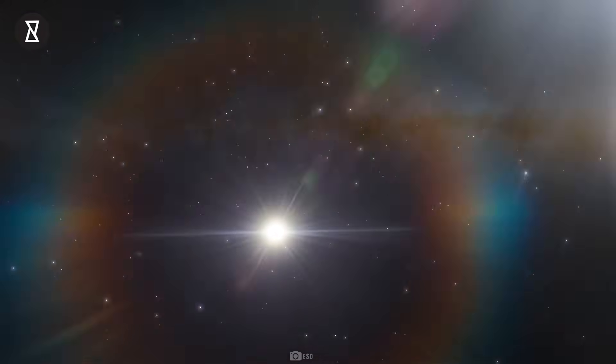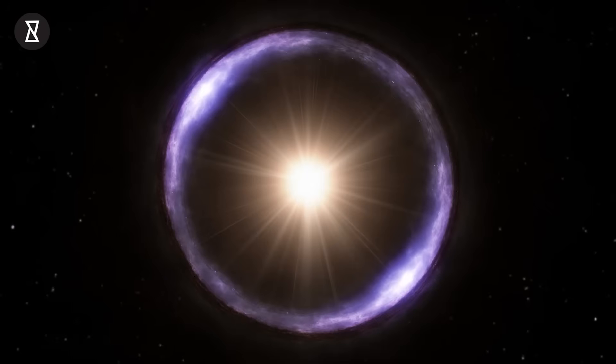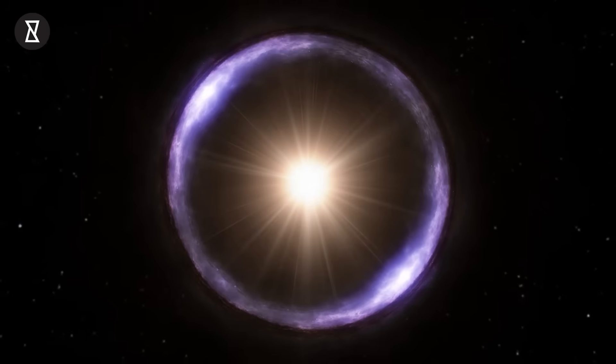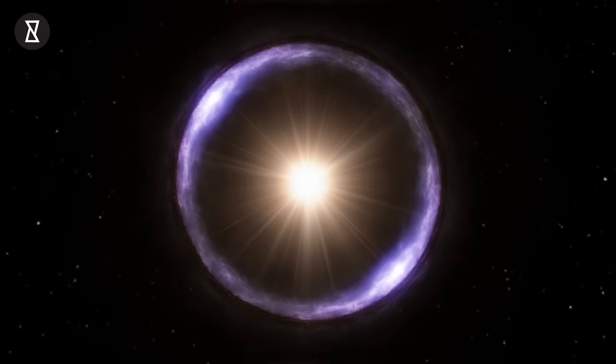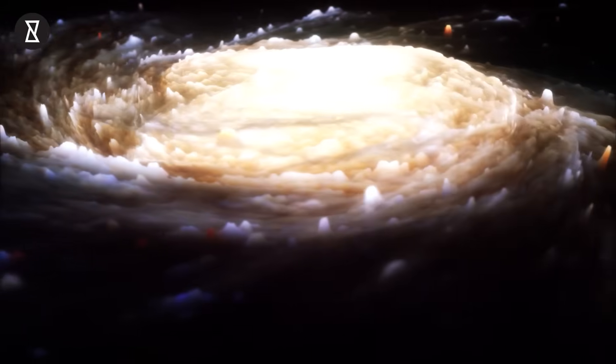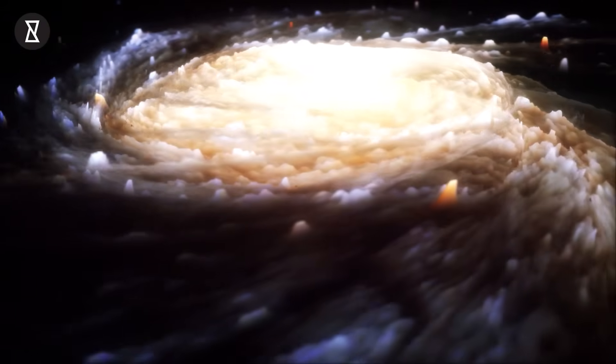An Einstein ring occurs when a distant galaxy has been magnified and wrapped into an almost perfect ring by a massive galaxy in front of it. Scientists tell us that we wouldn't be able to see this galaxy at all if it wasn't for the Einstein ring.